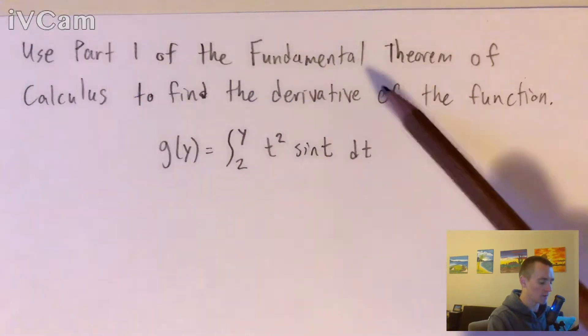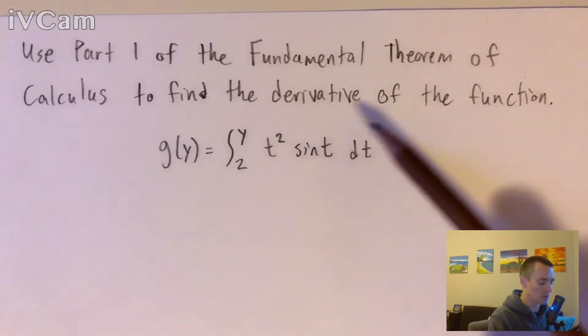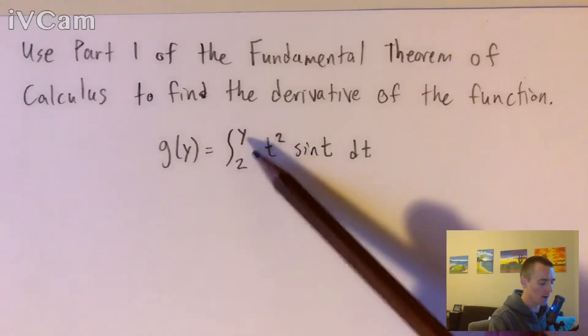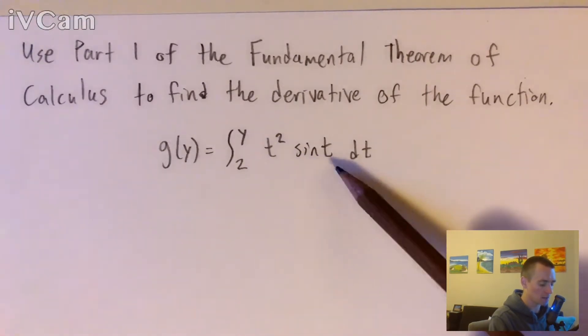We're going to use part one of the fundamental theorem of calculus to find the derivative of the function g of y equals the integral from 2 to y of t squared times sine of t dt.